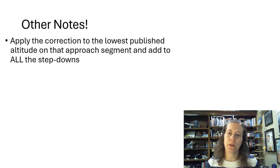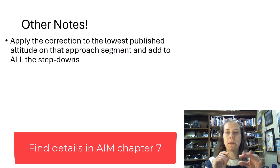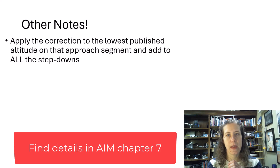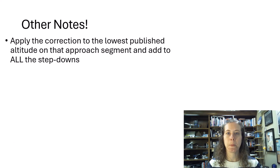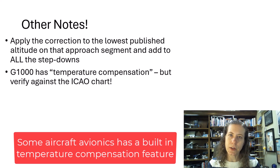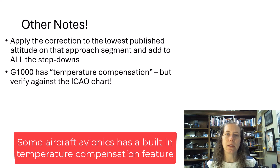A few other notes — all detailed in AIM. If you're doing the intermediate segment and there are step-downs, you find the correction for the lowest published altitude on that segment, then add that same correction value to all the step-downs on that segment. The G1000 has a temperature compensation feature — you can use it, but verify it against the ICAO chart. Don't just rely on the avionics alone; make sure you're using the ICAO chart correctly.